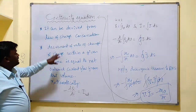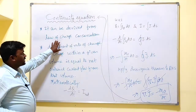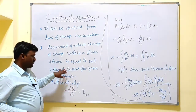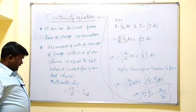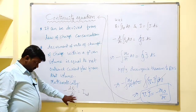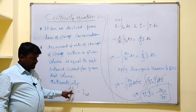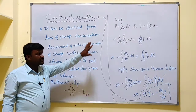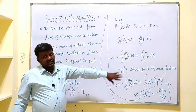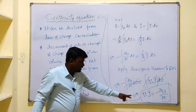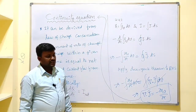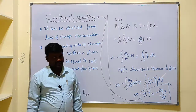To summarize how we derived this equation: we used the law of charge conservation, which states that the decrement of rate of change of charge within a given volume equals the net outward current flow from that volume. We represented charge in terms of charge density and current in terms of current density, then simplified using the divergence theorem to finally arrive at ∇·J = −∂ρv/∂t. This concludes our discussion of the continuity equation. Thank you.